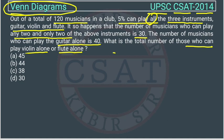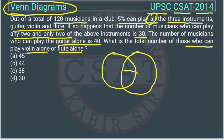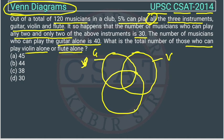We will make a Venn diagram of all three because we have three instruments. This circle represents guitar, this one represents violin, and this one represents flute.